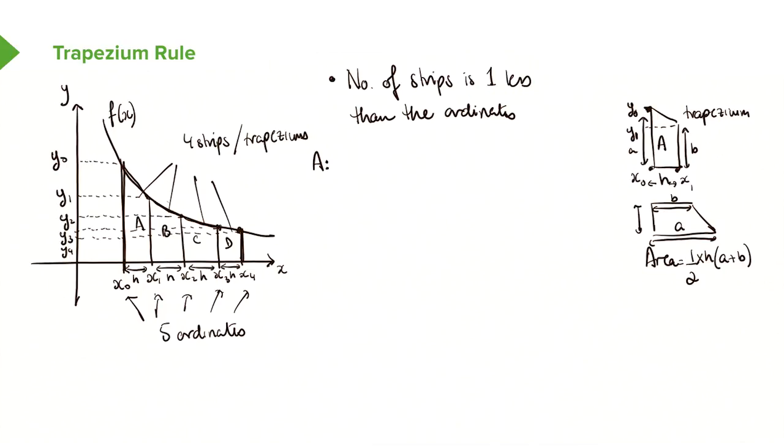Okay, so let's start to find the area of A. The area of A, following the area formula, is going to be a half times the height, which we are also calling h. And then you've got your a and b. So the a value here is the height of this trapezium, which is y0. And then the second height, which we can call b, of this trapezium is y1. And that is the area of shape A.